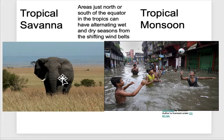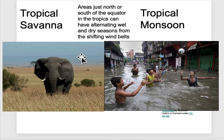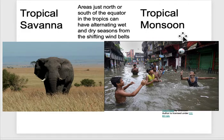Just north or south of the equator in the tropics we have the tropical savannah and the tropical monsoon. These can have alternating wet and dry seasons — they tend to be very warm all year, but they'll have distinct dry and wet seasons. The tropical savannah has a slightly drier climate, while the monsoon — here's a picture of the monsoon in India — has a slightly wetter wet season.